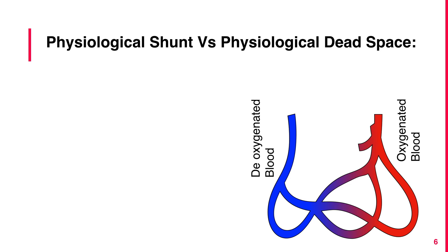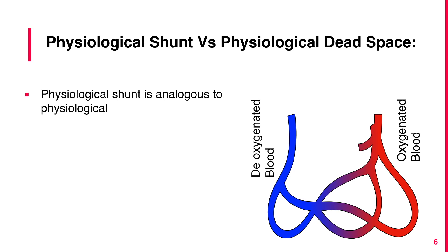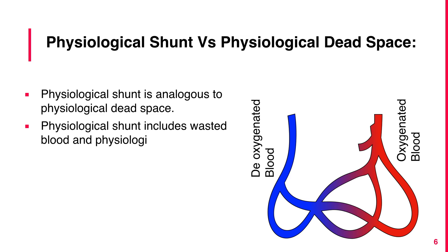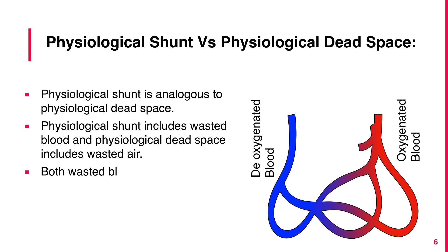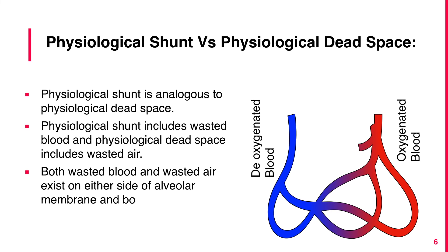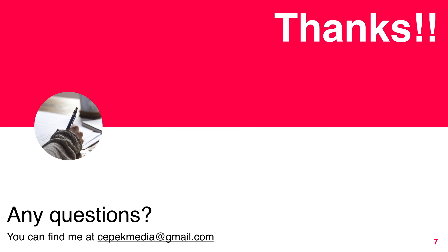Physiological shunt is analogous to physiological dead space. Physiological shunt includes wasted blood and physiological dead space includes wasted air. Both wasted blood and wasted air exist on either side of the alveolar membrane, and both affect the ventilation-perfusion ratio.